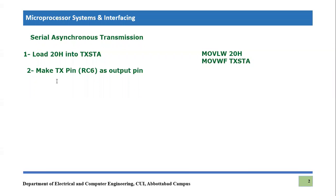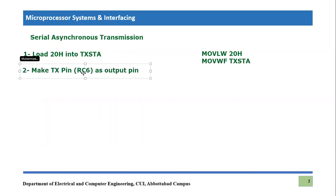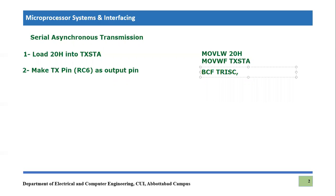The next step is to make the TX pin — which is Port C pin RC6 — an output pin, because we are going to transmit and information is going out from the device. To declare any pin as an output pin, we use BCF (Bit Clear File) on the TRISC register. You can write RC6 or simply write TX, since we are dealing with the transmitter. Either way is correct.